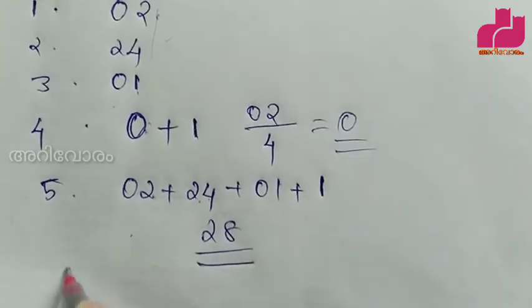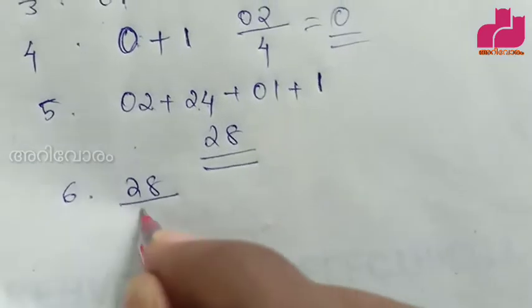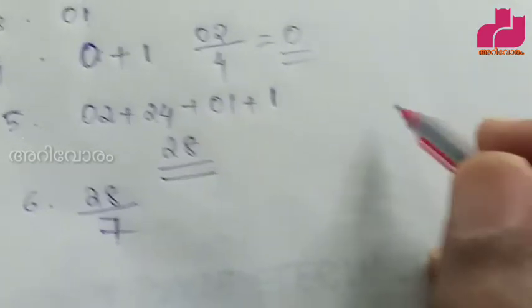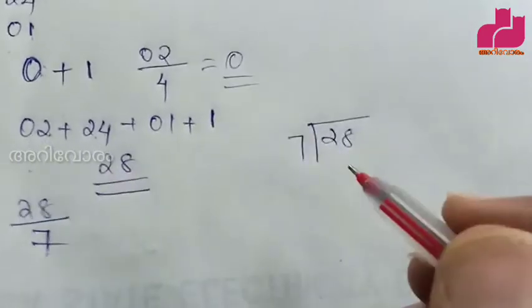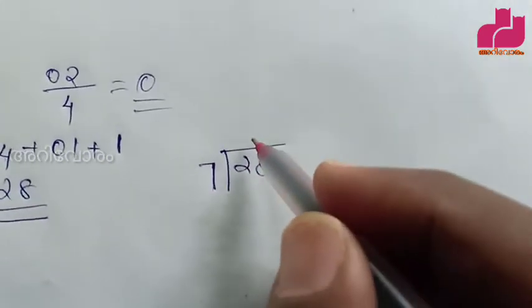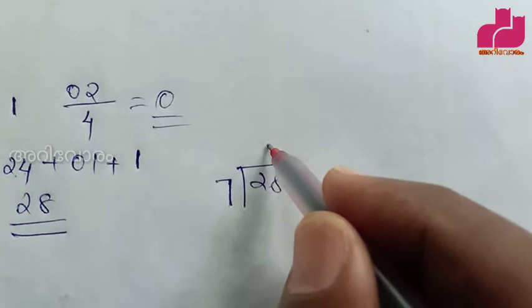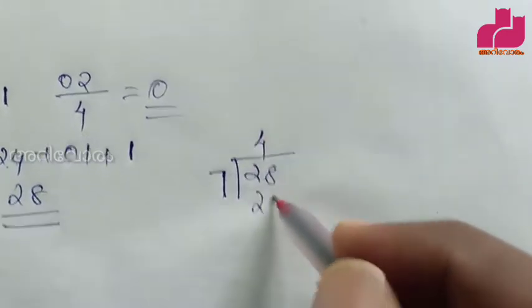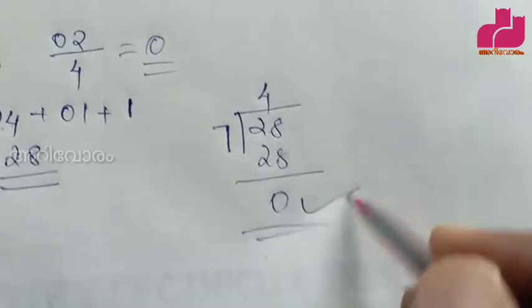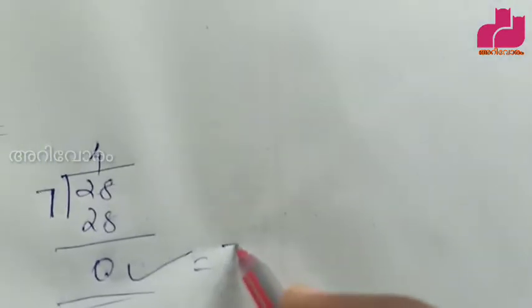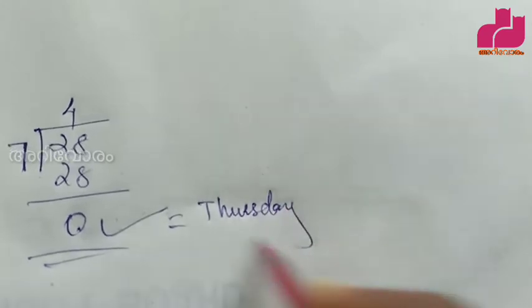Total is 22 and the answer is 7 divided, and the system is 7 divided. Keywords of the week: 7 divided. Then the answer is — taste day. Ok, in the previous video we did this.